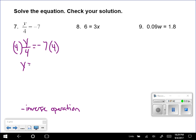So Y is going to be equal to negative 28. Negative times a positive is negative. So I'm going to plug that back in to check. Negative 28 divided by 4 should equal negative 7. And it does.